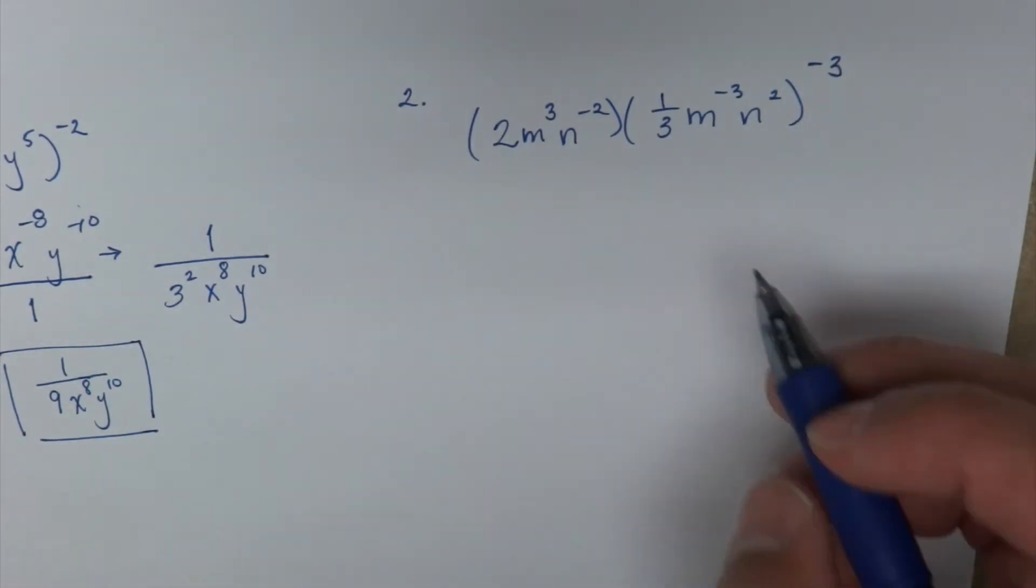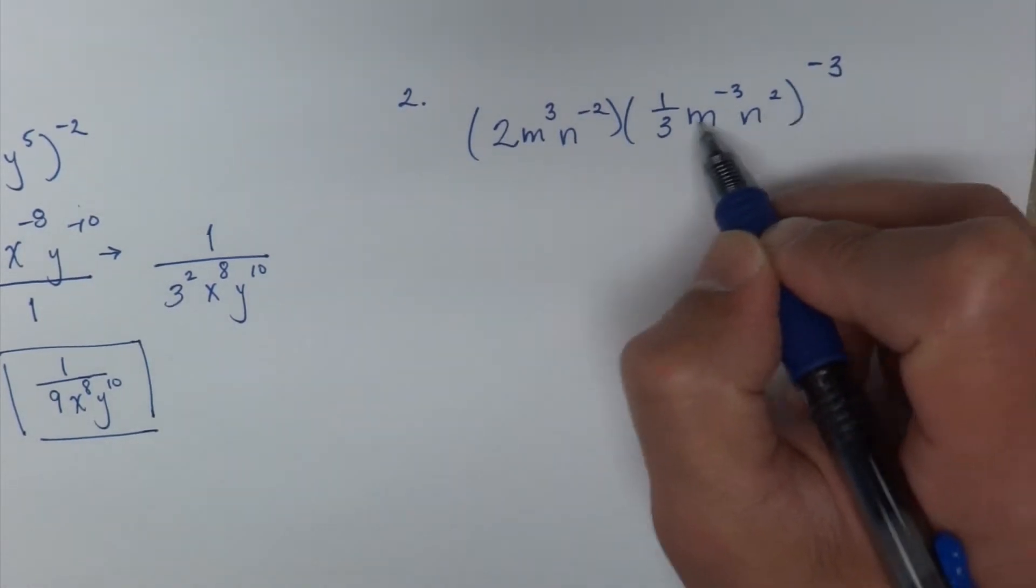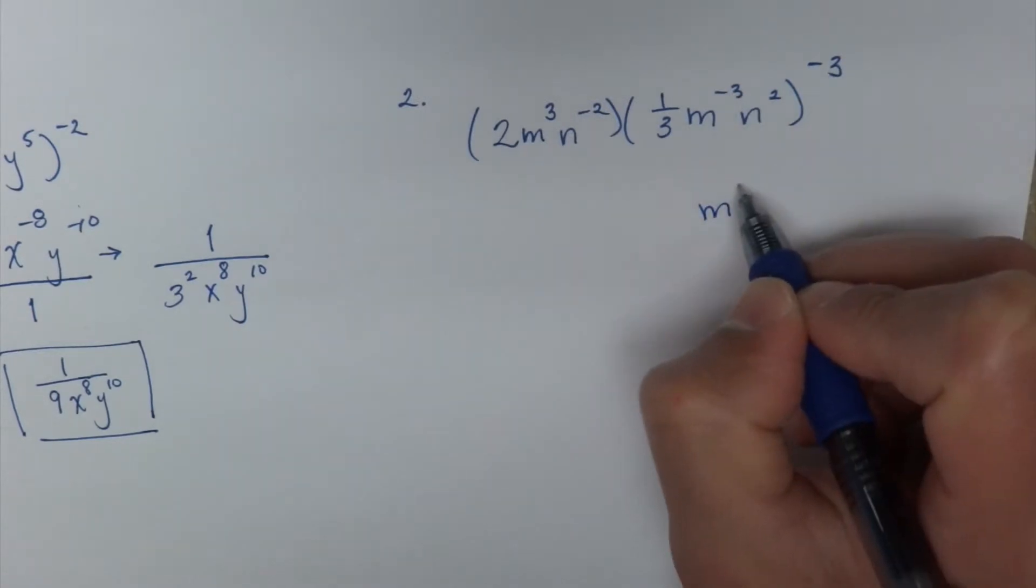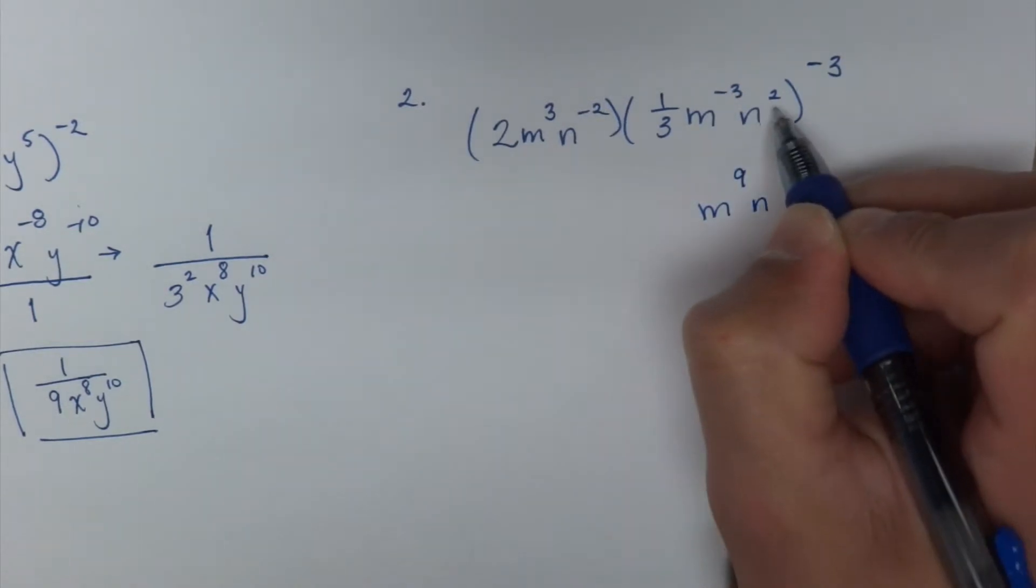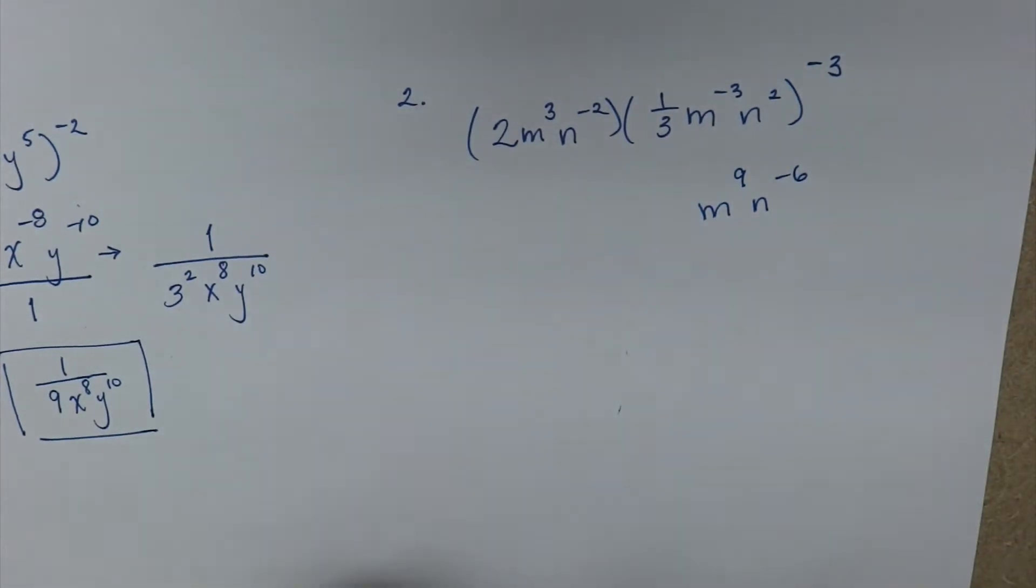And much the same as the other one, the first example, I'm going to multiply because the negative 3 is right next to the parenthesis here. So this becomes negative 3 times negative 3 is 9, 2 times negative 3 is negative 6. Now for the 1/3 because that is a constant, it's still like a base.